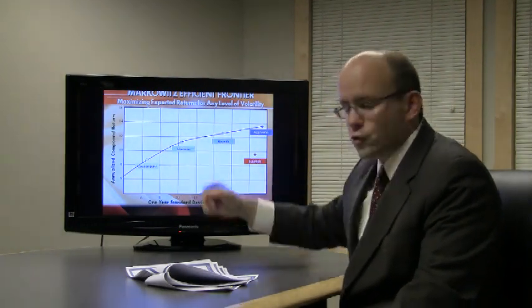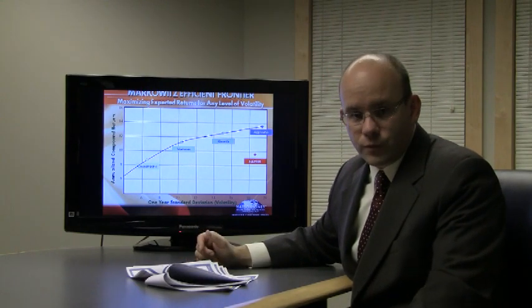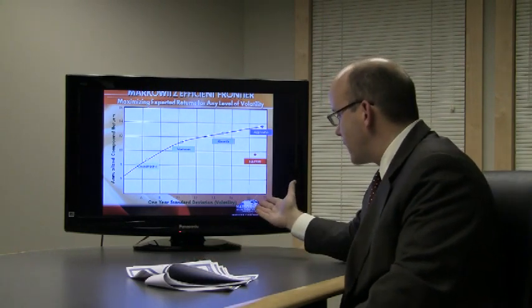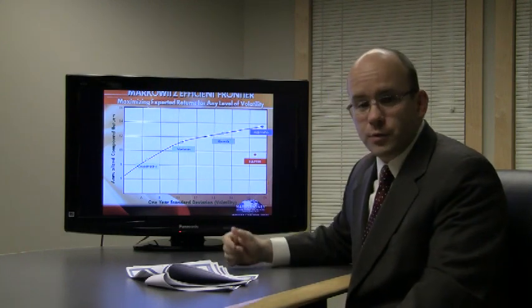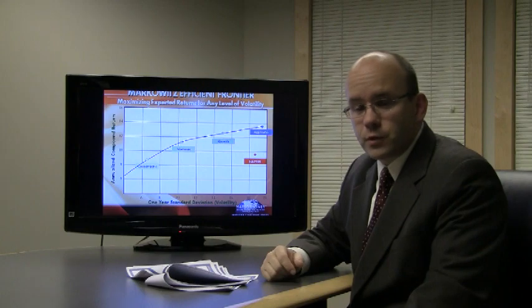The axis on the left shows you the expected annualized return of a given portfolio. The bottom shows the standard deviation or volatility, often associated with risk—how volatile that investment could be.